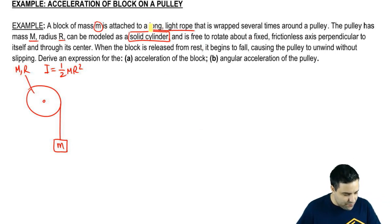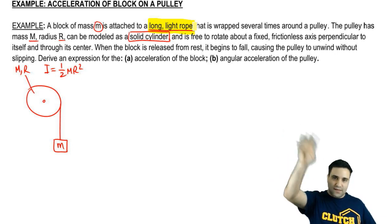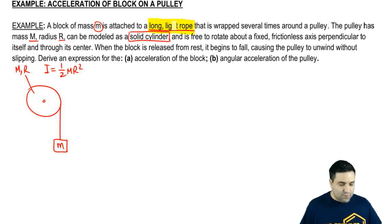I want to talk about some words here. First of all, long light rope. Long just means you don't have to worry about running out of rope. Light means that the rope has no mass. Basically all problems will be like that, so this is just standard language. Wrapped several times, again, you don't have to worry about running out of rope.